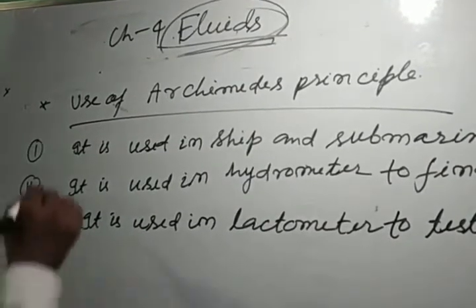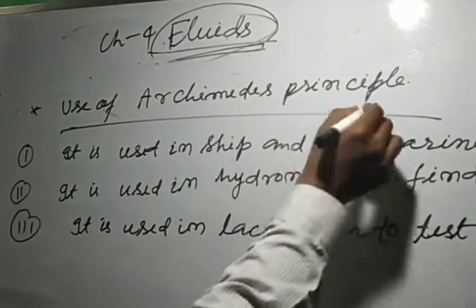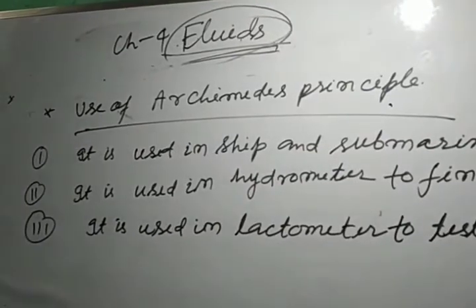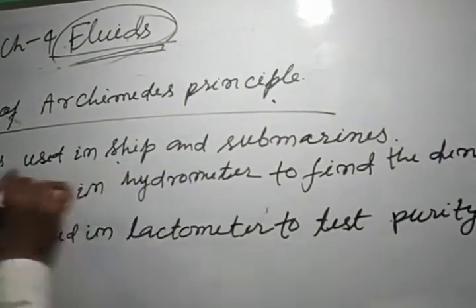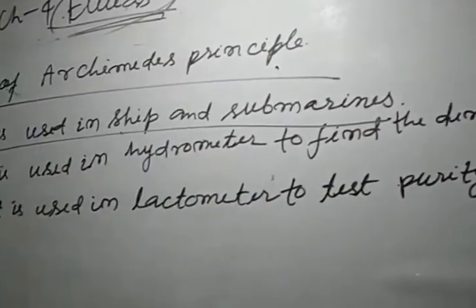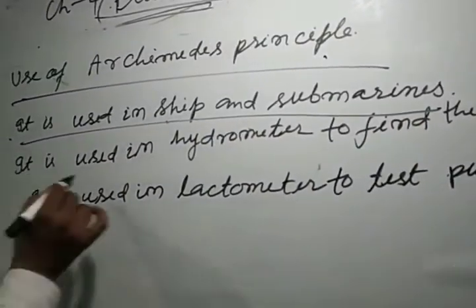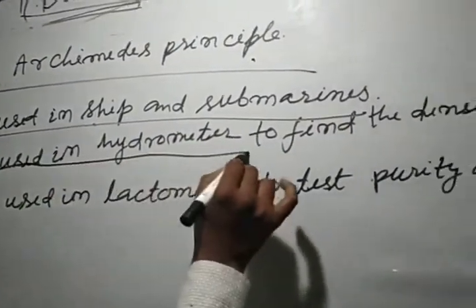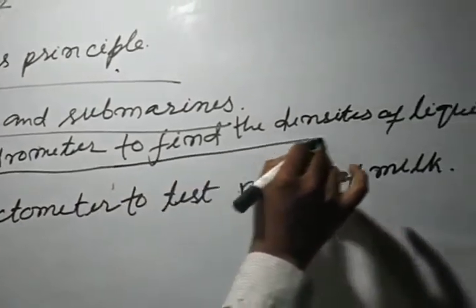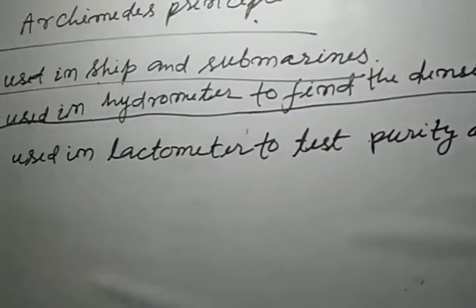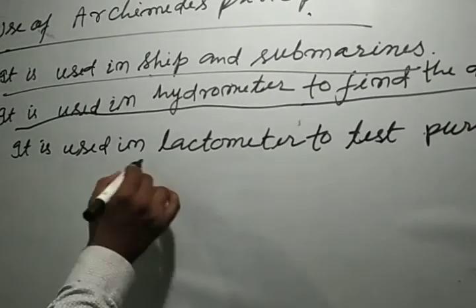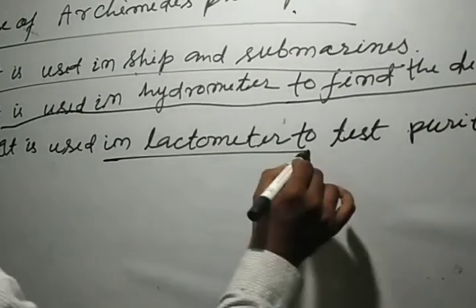Now let us look at the uses of Archimedes' principle. Archimedes' principle is used in ships and submarines. It is also used in the hydrometer, which is used for finding the density of liquids, and in the lactometer, which is used to test the purity of milk.